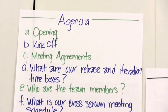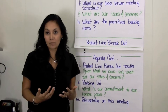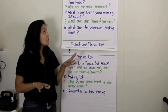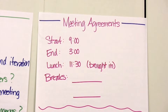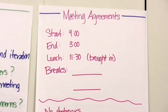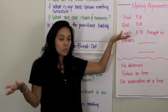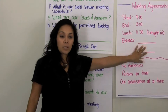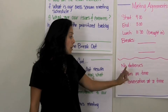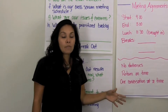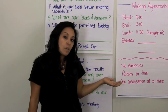The VP of product development gives a kickoff — basically a high-level roadmap of what's upcoming for the next release. I generally wouldn't allow this to go longer than 30 minutes, but it's a great high-level view for the entire team. Next are meeting agreements. We review the start and end times; lunch is generally at 11:30 and I usually order it and have it brought in. We define the breaks and our meeting agreements for the day, which generally include no electronics, return on time, and one conversation at once.